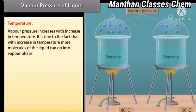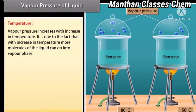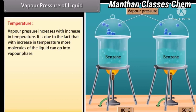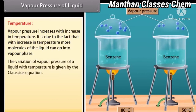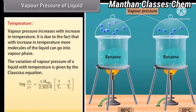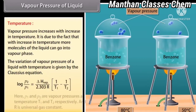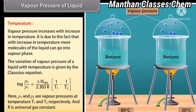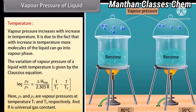Temperature: Vapor pressure increases with increase in temperature. This is due to the reason that with increase in temperature, more molecules of the liquid can go into vapor phase. The variation of vapor pressure of a liquid with temperature is given by the Clausius equation, where P1 and P2 are vapor pressures at temperatures T1 and T2 respectively, and R is the universal gas constant.